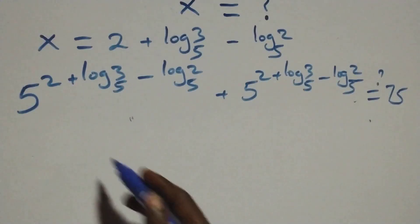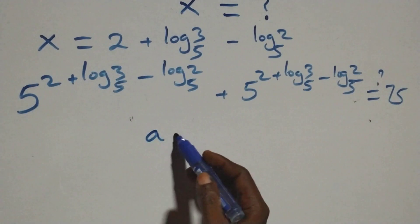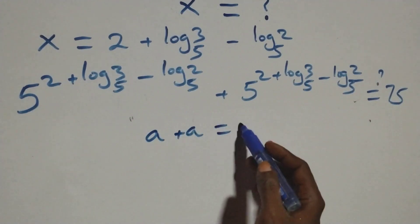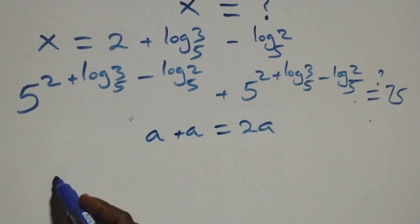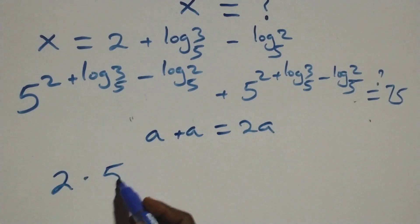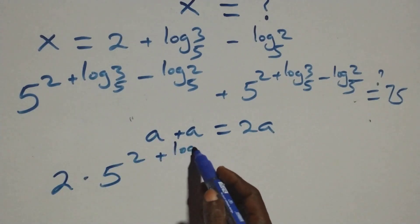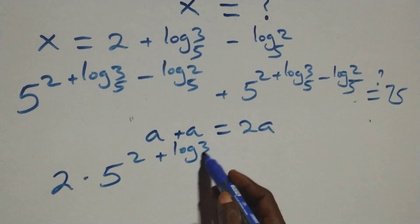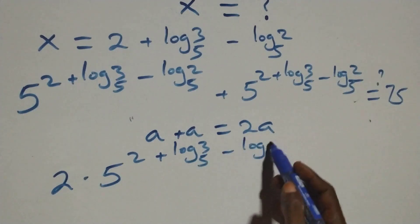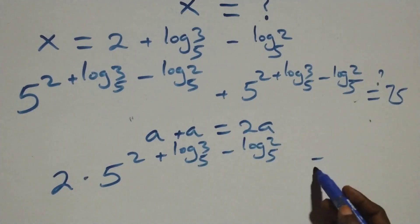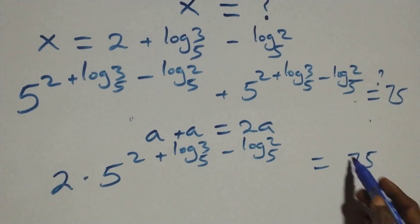We have the same expression added to itself, so this follows the law of indices: a raised to power n plus n equals 2a. Therefore this becomes 2 times 5 raised to power (2 + log₅3 − log₅2) equals 75.